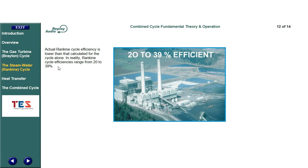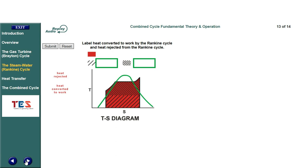Actual Rankine cycle efficiency is lower than that calculated for the cycle alone. In reality, Rankine cycle efficiencies range from 20 to 39%.